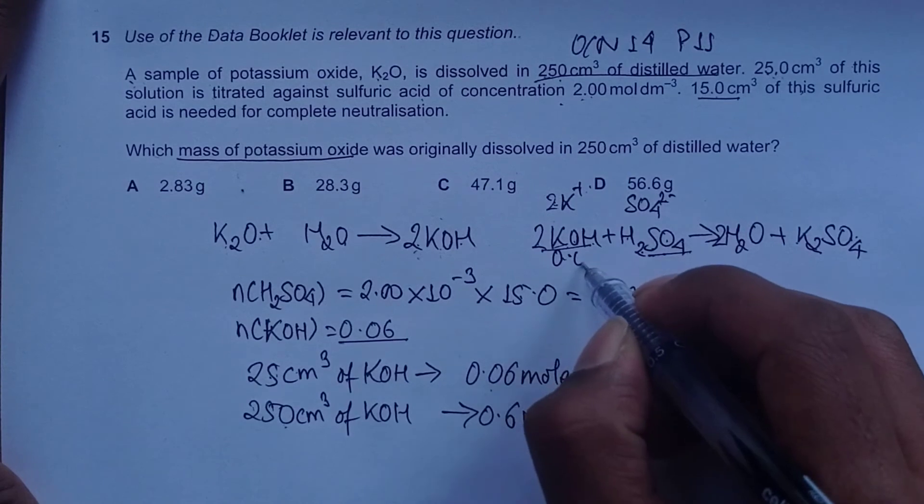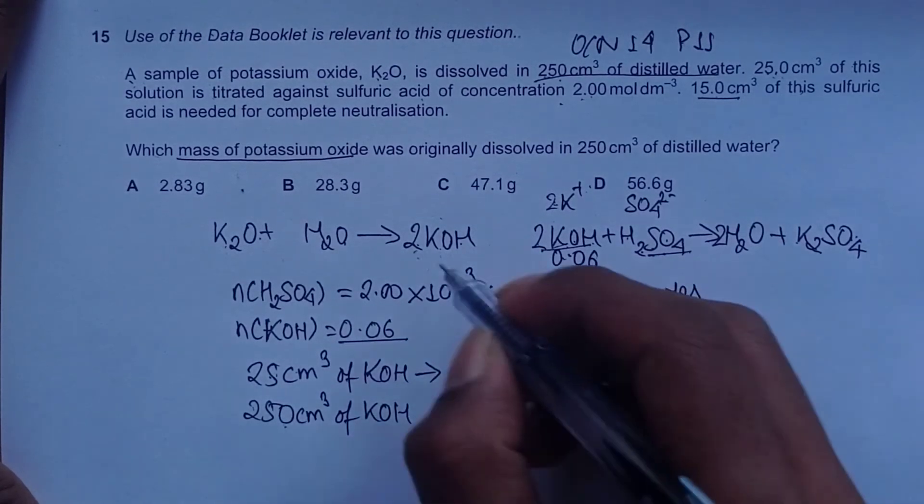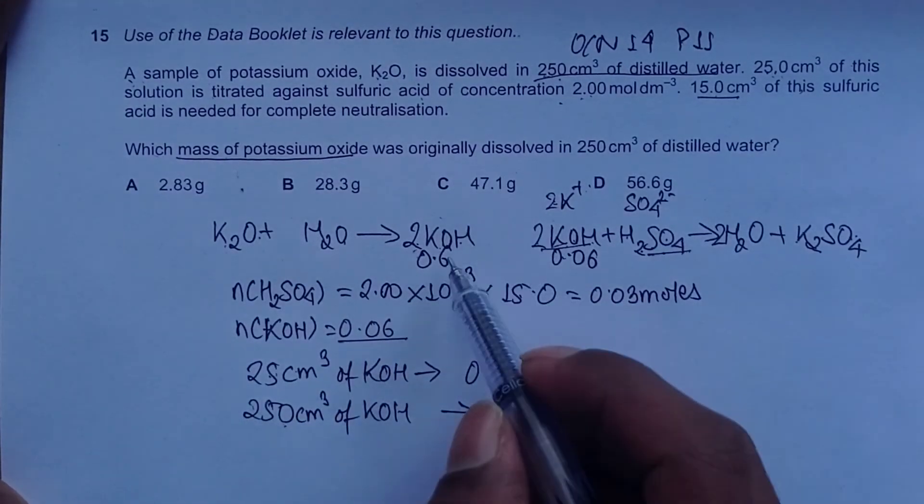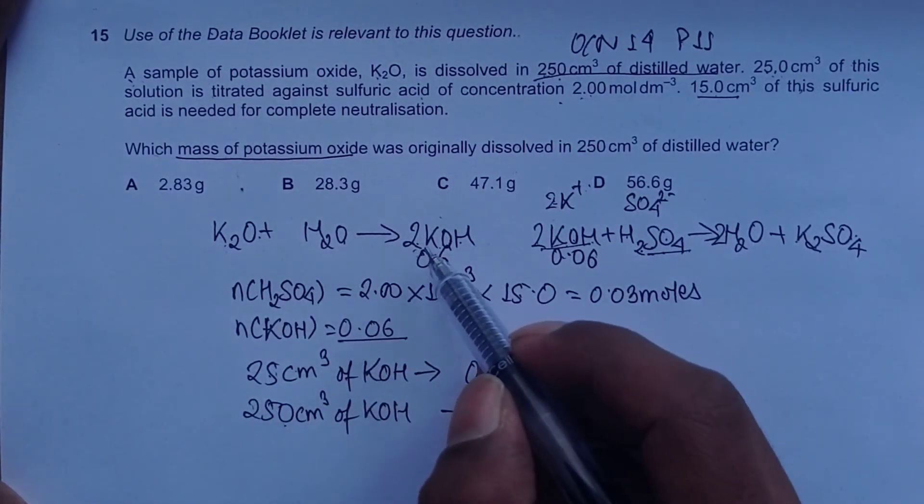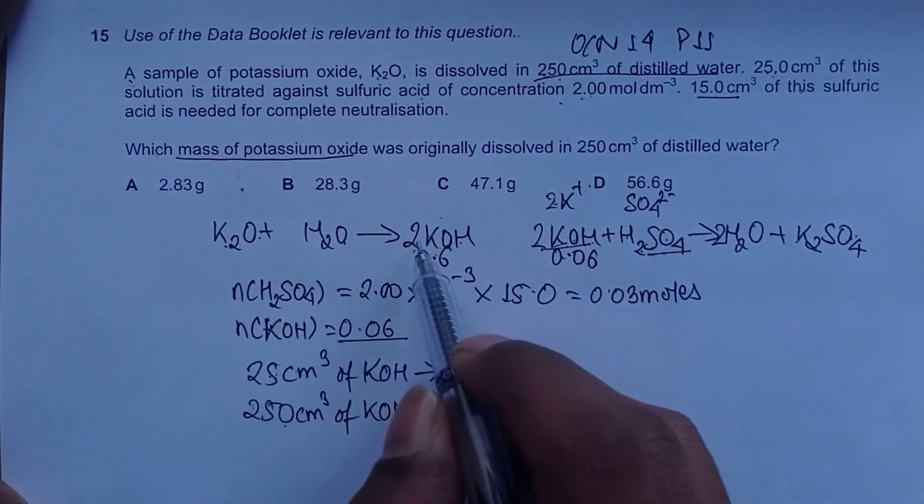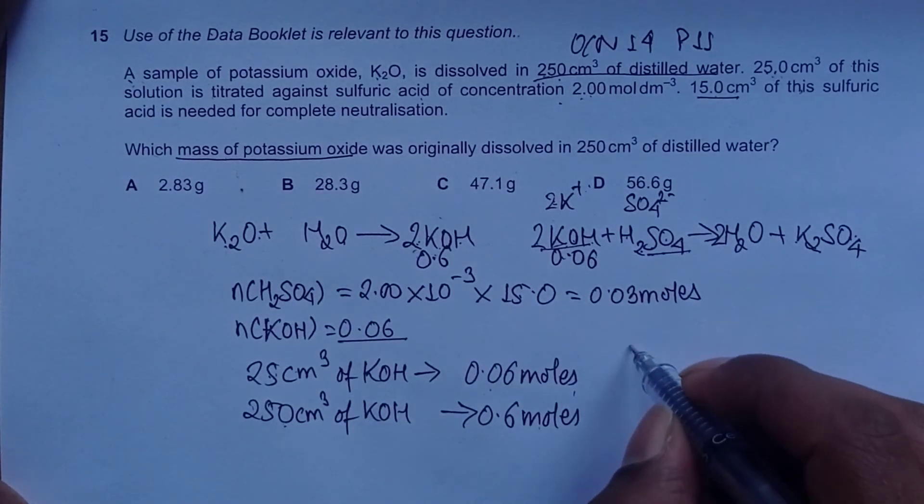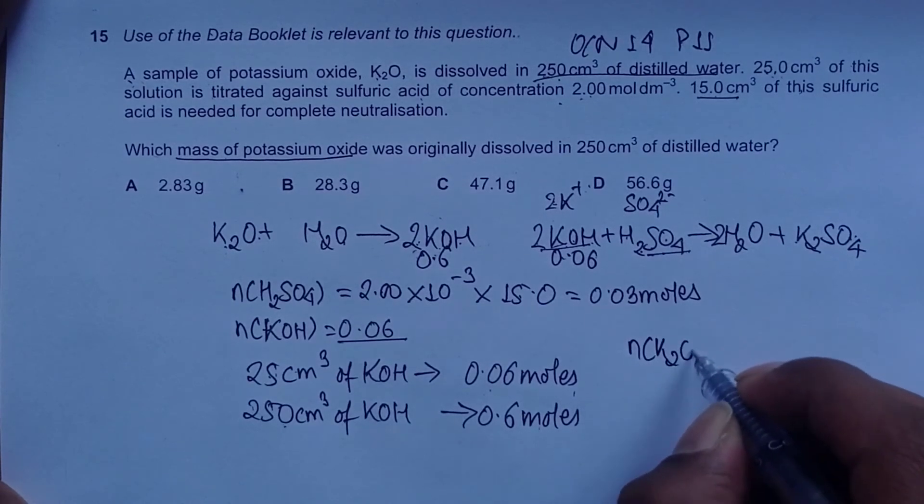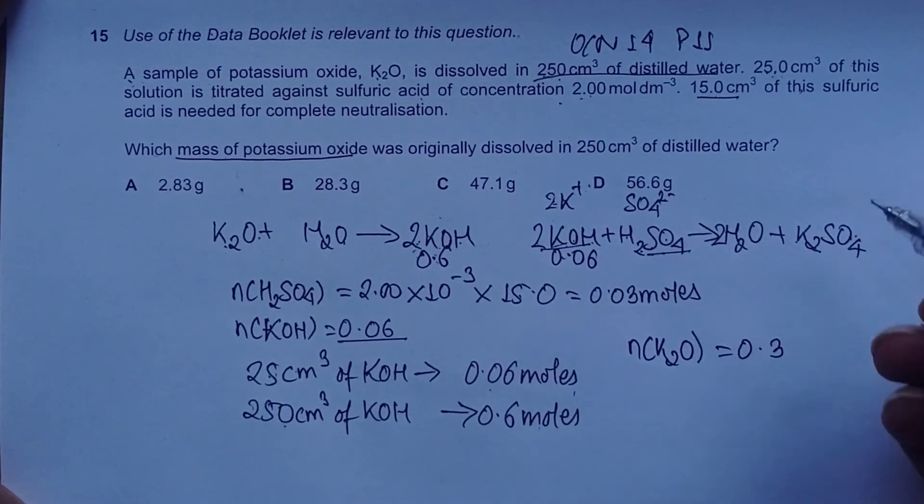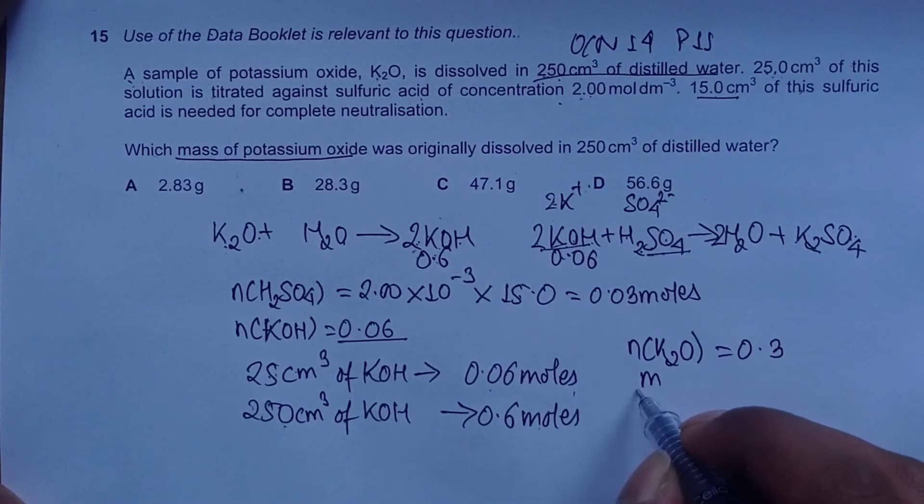We need to find the mass of potassium oxide originally used. Using molar ratios, one mole of potassium oxide gives two moles of KOH, so moles of K2O is 0.3 because 0.6 ÷ 2 = 0.3. Moles equals mass over Mr.